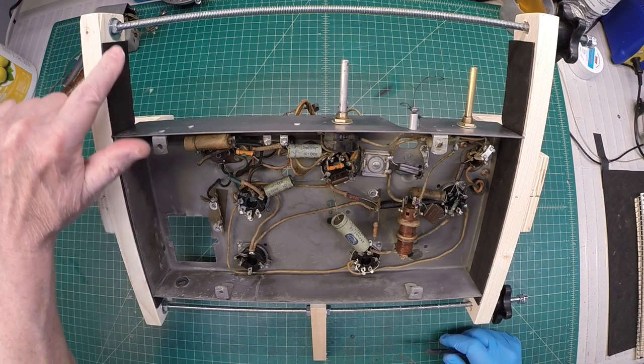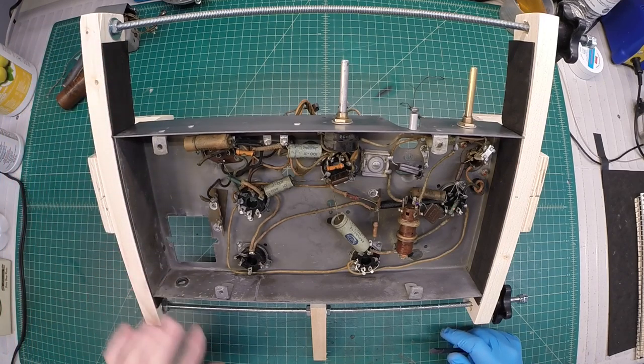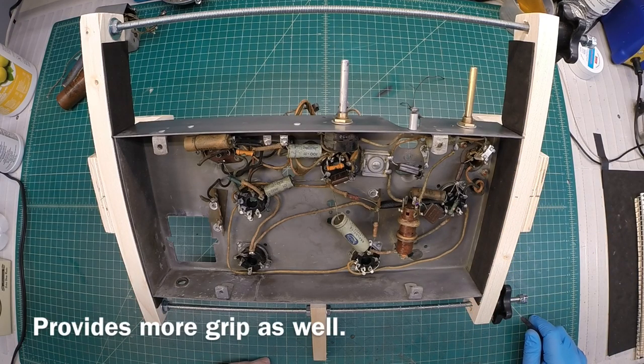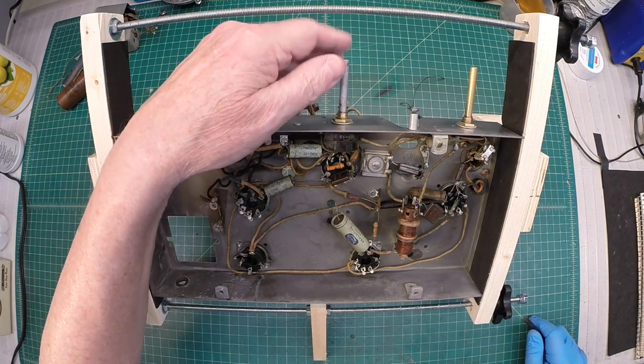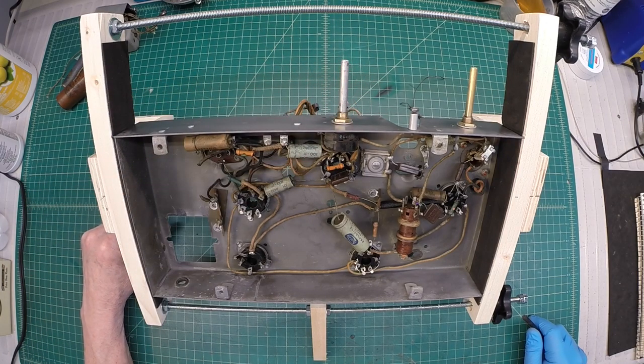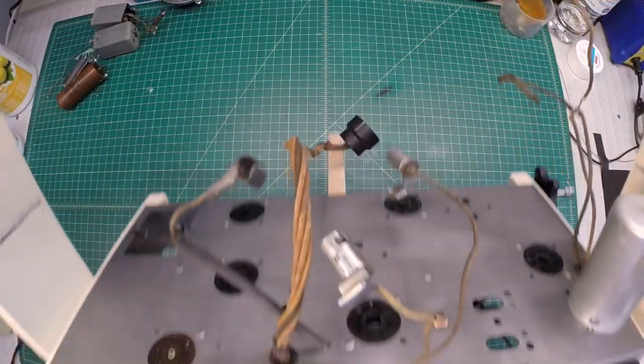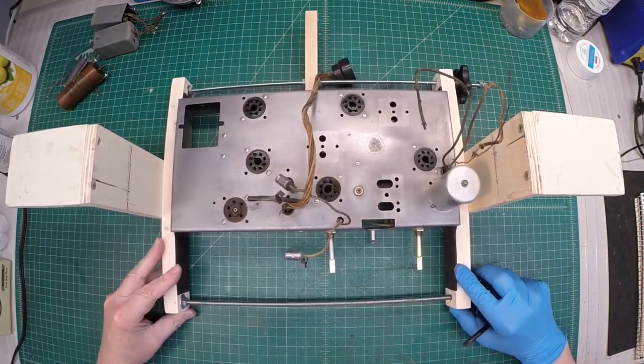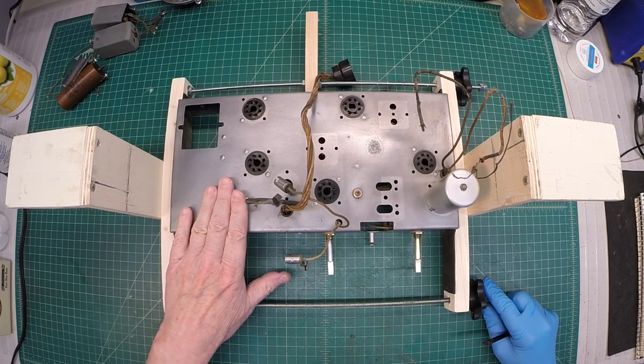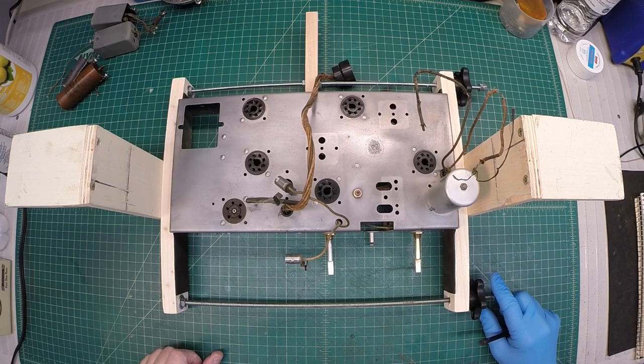A couple other things I did as well, I just put some padding here with some double-edged tape along the sides so we don't scuff up the sides of the radio. And I left enough room here to be able to get the tuning condenser back in as well. And of course, if I want to work on the front side of the radio, I can just flip it over as such.